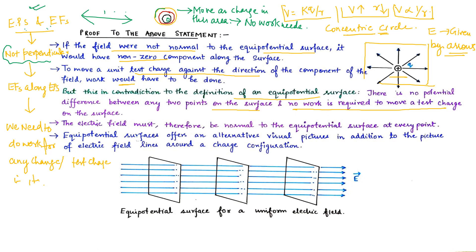The electric field must therefore be normal to the equipotential surface at every point. Equipotential surfaces offer an alternative visual picture in addition to the picture of electric field lines around a charge configuration, and this gives us another 3D view which helps us understand various other mechanisms in physics.